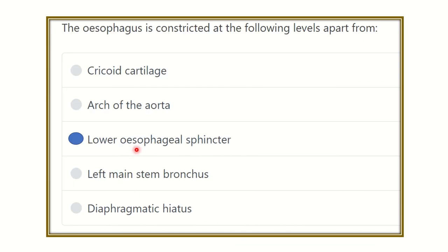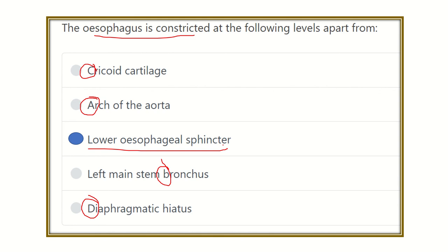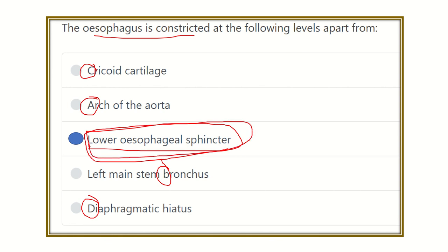Using the mnemonic A-B-C-D — A for arch of the aorta, B for bronchus, C for cricoid cartilage, and D for diaphragmatic hiatus — we can identify the answer. The lower esophageal sphincter is NOT a constriction of the esophagus, because at that level only smooth muscle acts as a sphincter but there is no definitive anatomical narrowing. Therefore, the final answer is the lower esophageal sphincter.